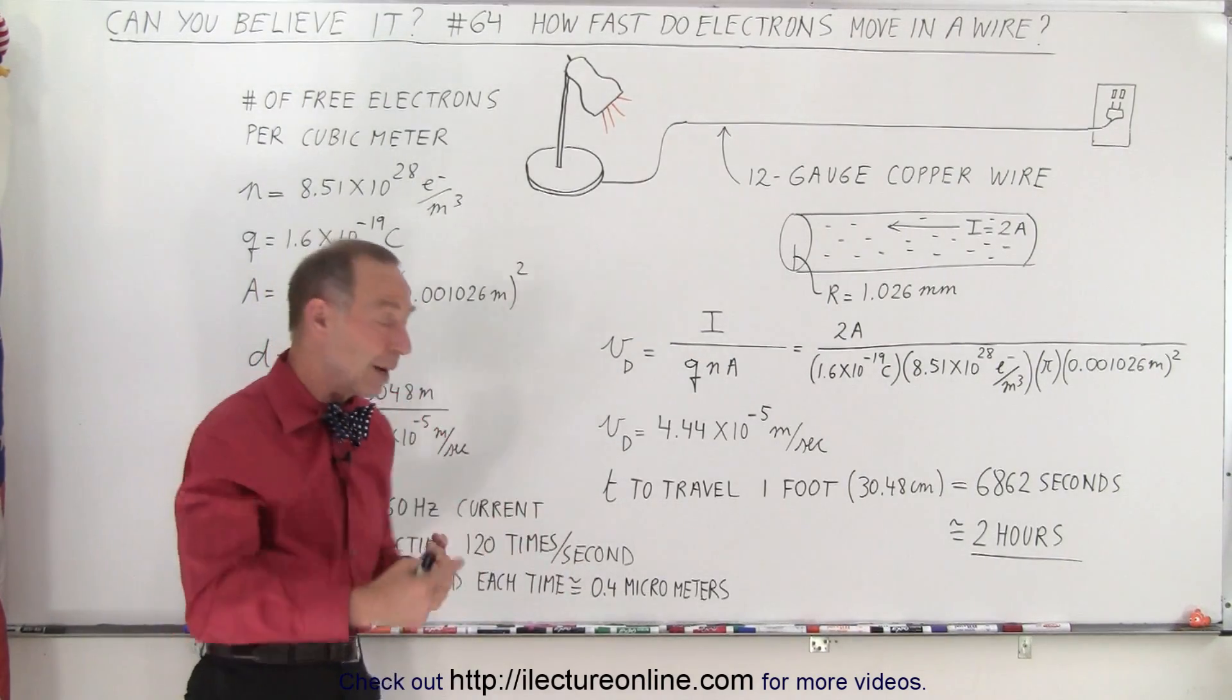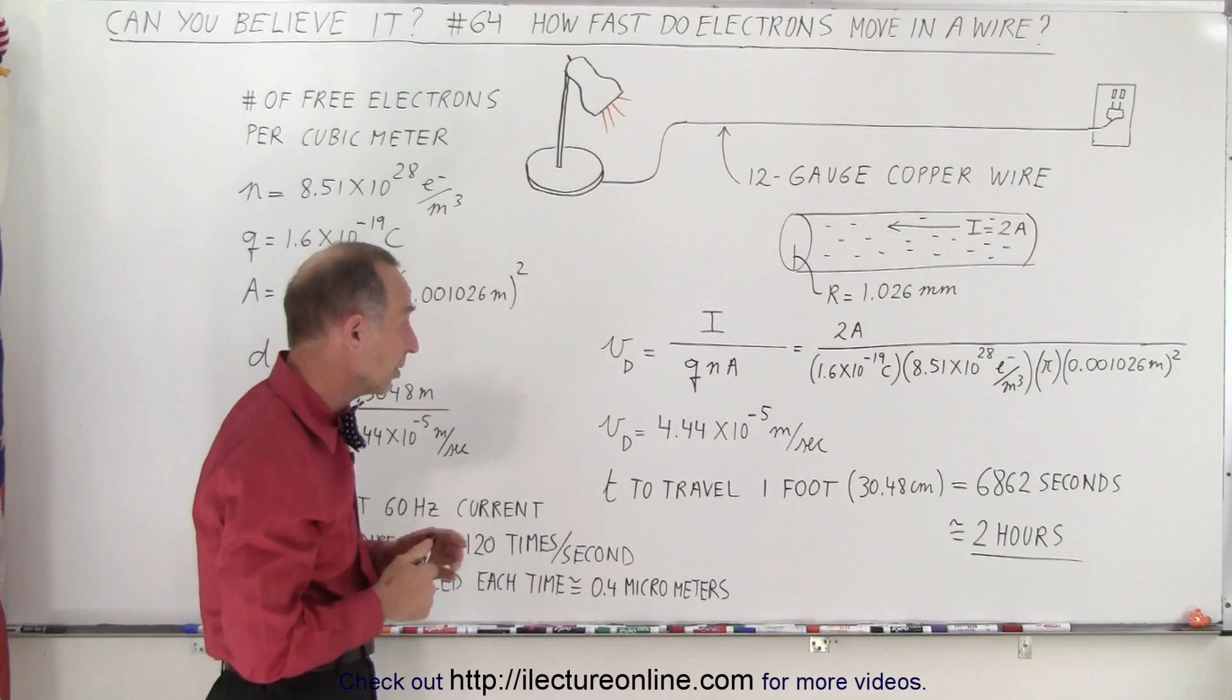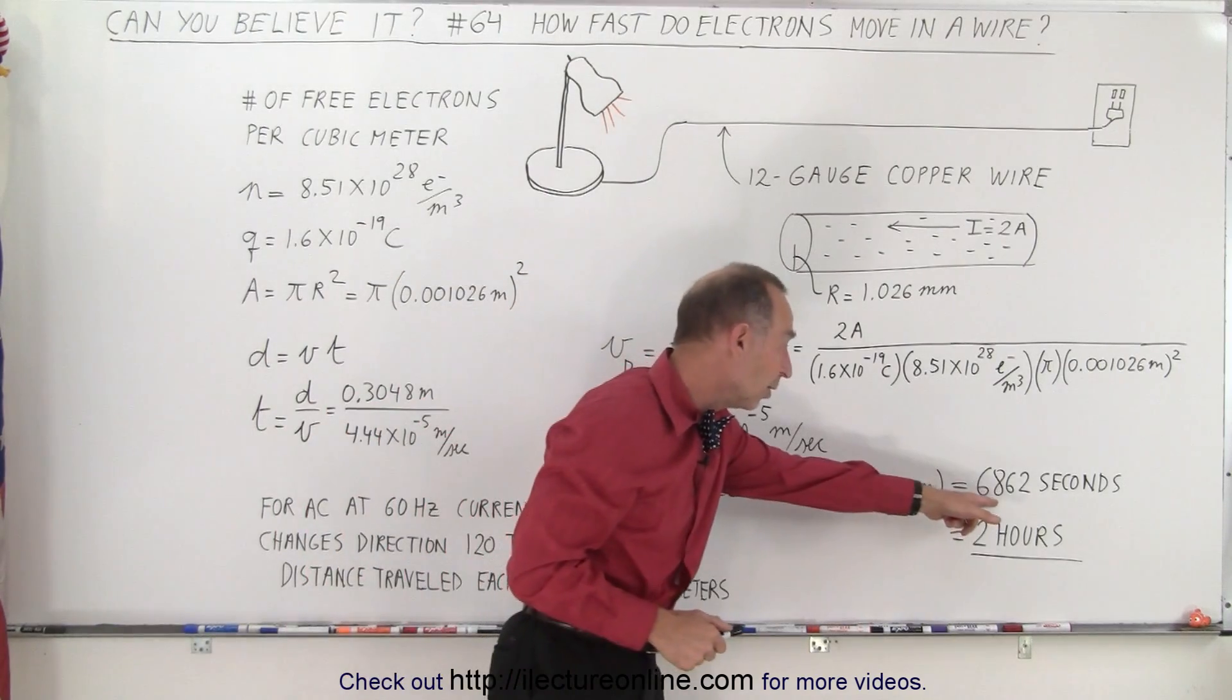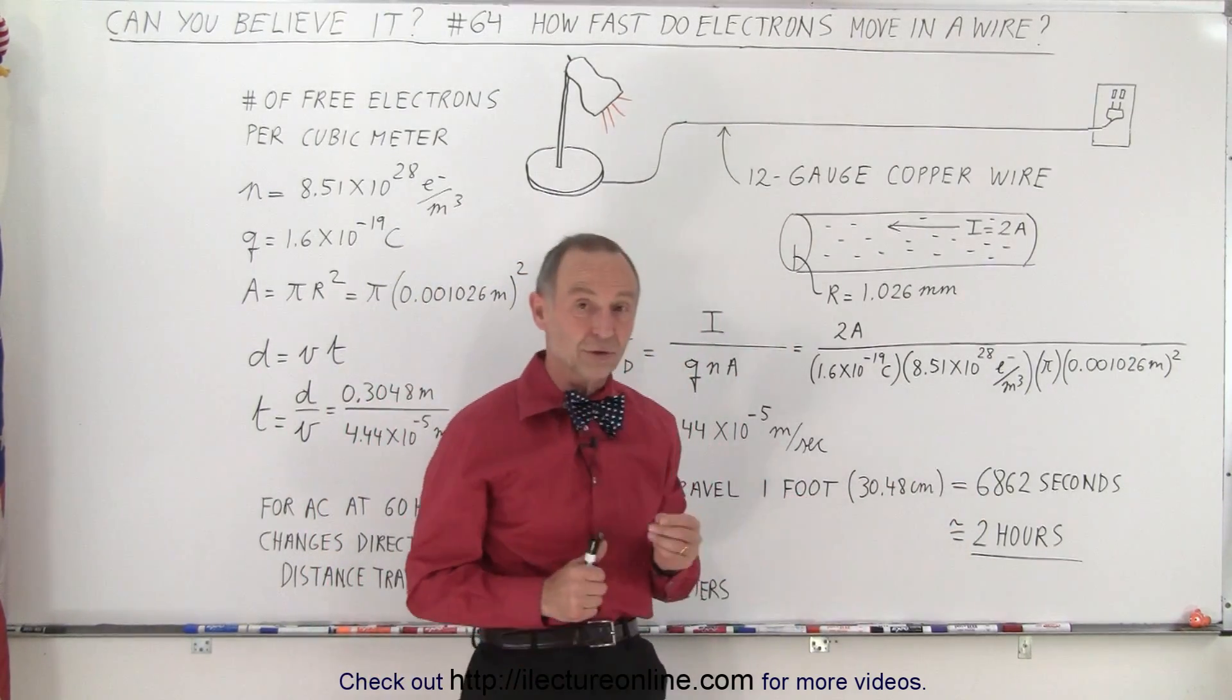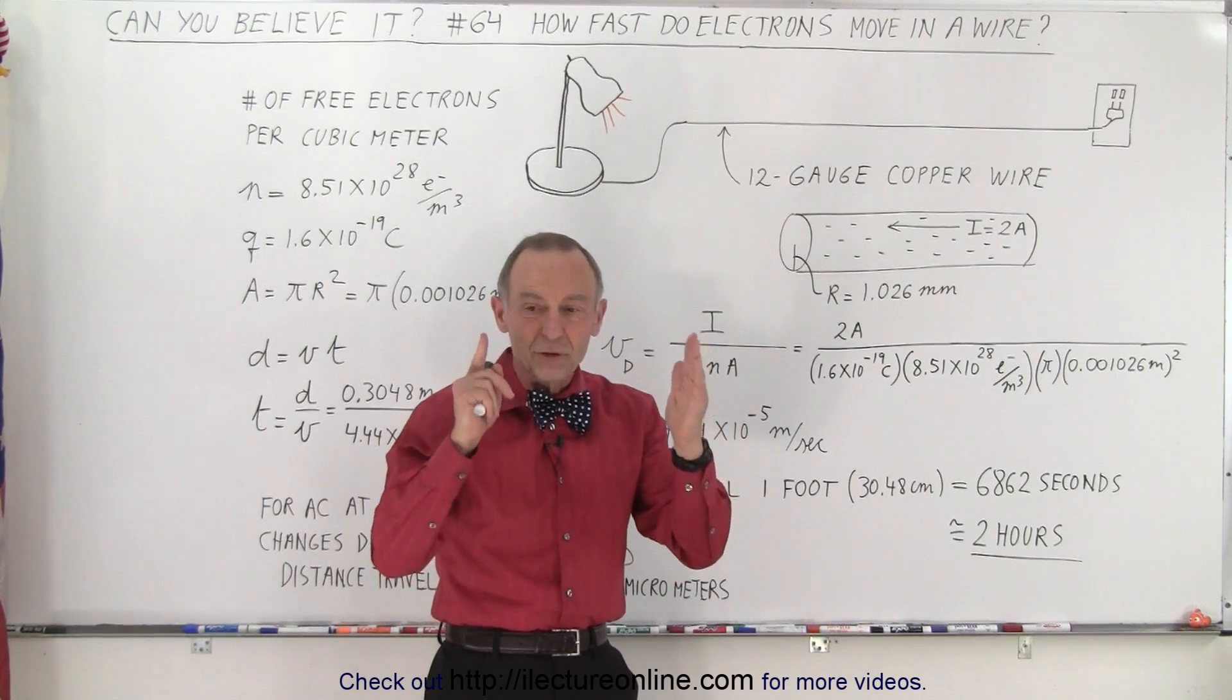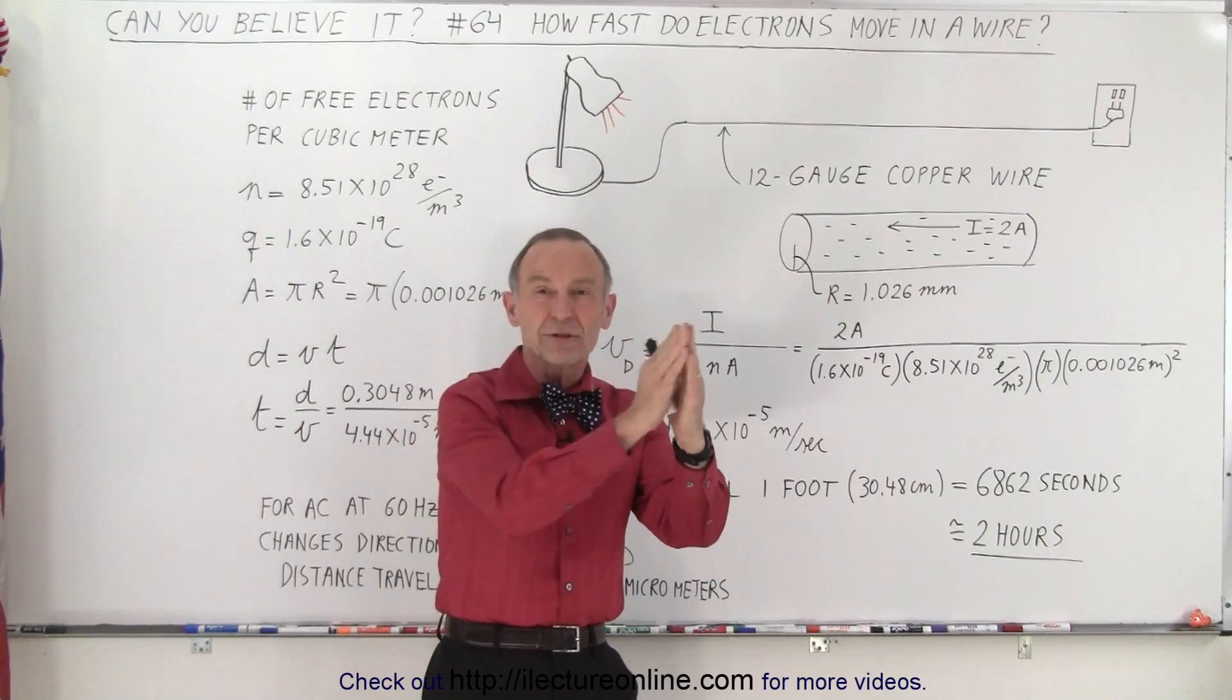If we then turn that around and say, well, how long does it take for the electrons to travel one foot, which is about 30 centimeters? It turns out it would take almost 7,000 seconds, which is almost two hours. So electrons travel so slow that it would take them almost two hours to travel one foot along the wire.